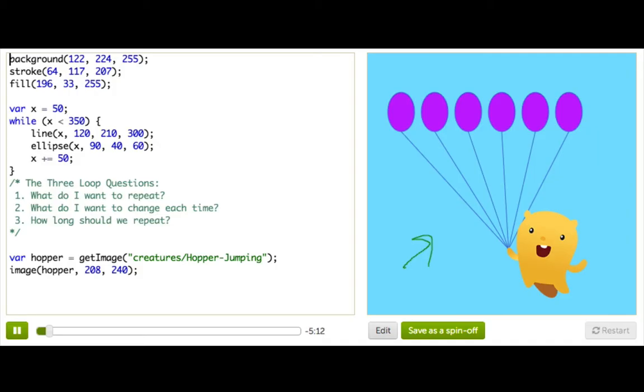So first, it always helps to break down your program into steps. We'll start by drawing these balloons, which are just the same ellipse repeated over and over, and that sounds like a job for a loop. Then, we'll take on these lines, and then finally, we'll add balloon hopper herself.